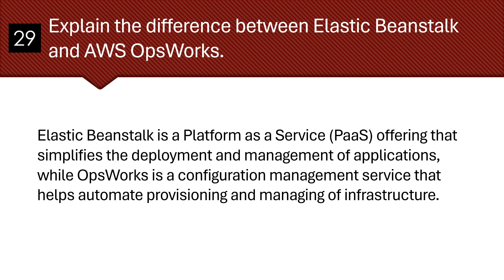Explain the difference between Elastic Beanstalk and AWS OpsWorks. Elastic Beanstalk is a platform as a service offering that simplifies the deployment and management of applications, while OpsWorks is a configuration management service that helps automate provisioning and managing of infrastructure.